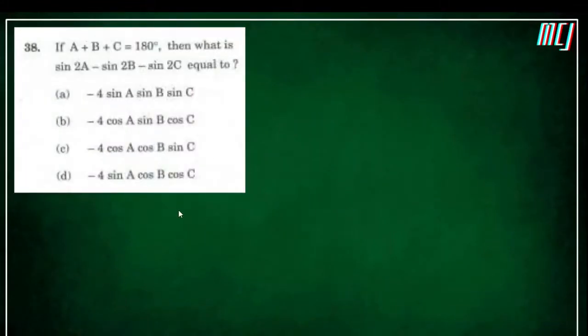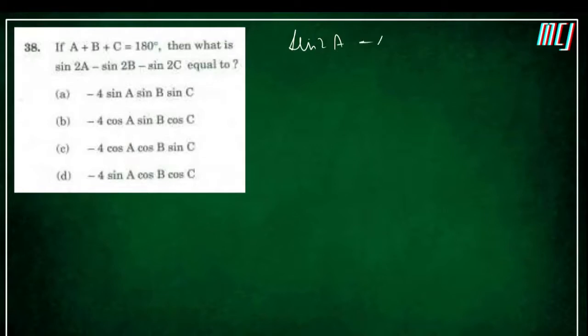The next question: given a + b + c = 180°, we need to find sin2A − sin2B − sin2C.